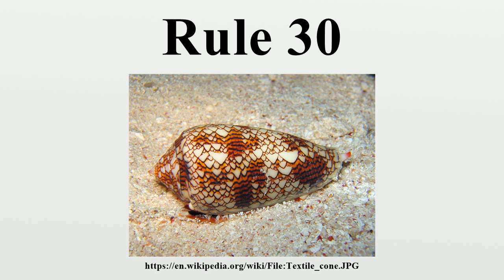Time increases down the vertical axis. The following pattern emerges from an initial state in which a single cell with state 1 is surrounded by cells with state 0. The vertical axis represents time and any horizontal cross-section of the image represents the state of all the cells in the array at a specific point in the pattern's evolution. Several motifs are present in this structure, such as the frequent appearance of white triangles and a well-defined striped pattern on the left side, however the structure as a whole has no discernible pattern.